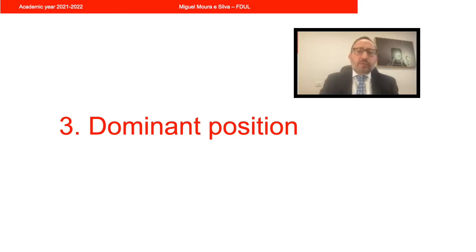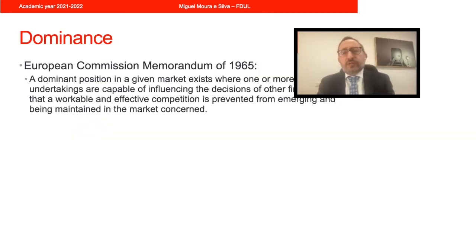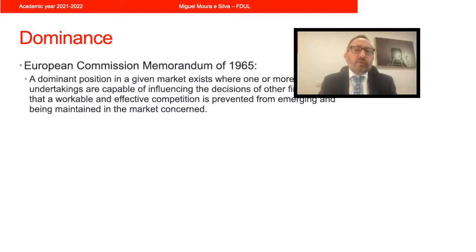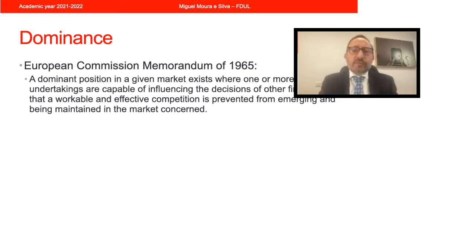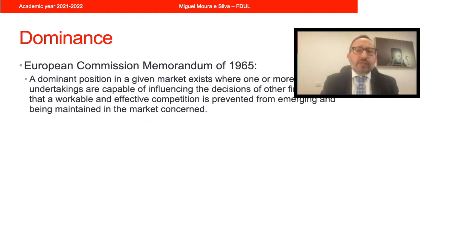Dominant position was earlier defined in 1965 in a guidance document by the European Commission as a position whereby one or more undertakings have the capability of influencing the decisions of other firms, so that workable and effective competition is prevented from emerging and being maintained in the market concerned. This is clearly addressed at the power of dominant firms to influence the decisions of other market players.